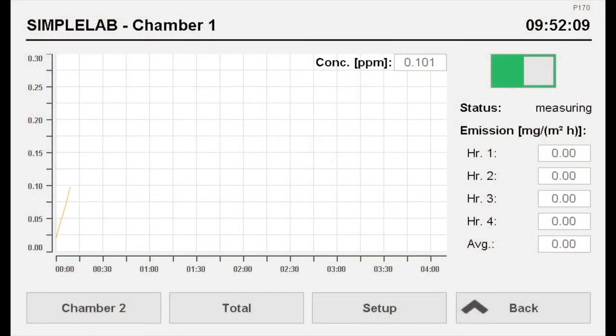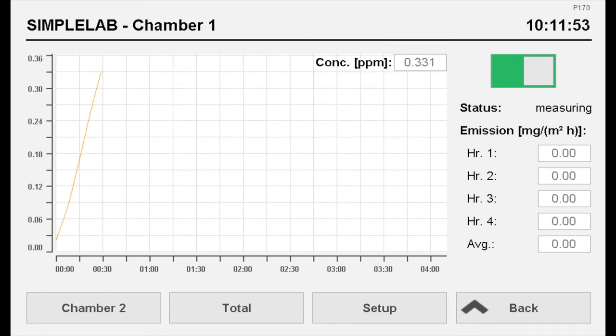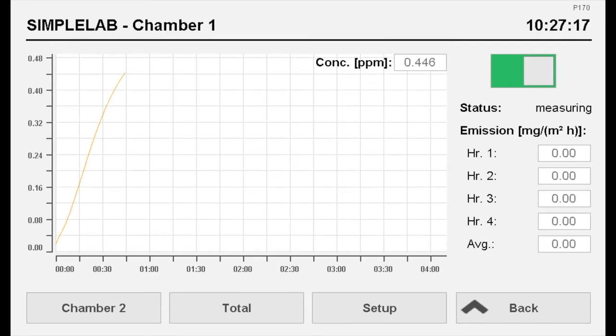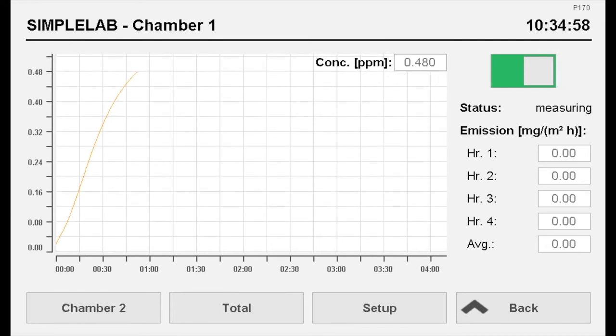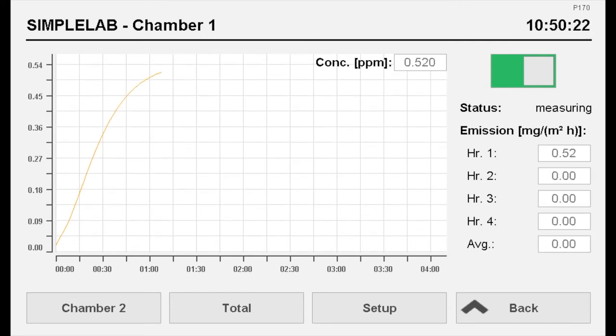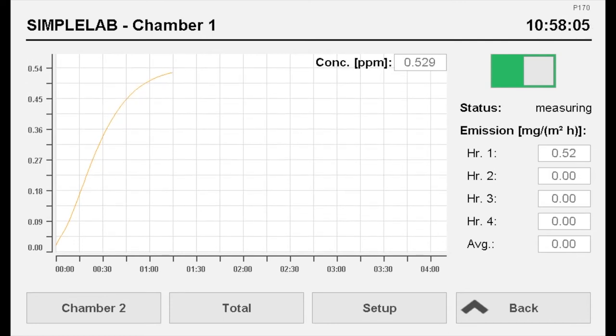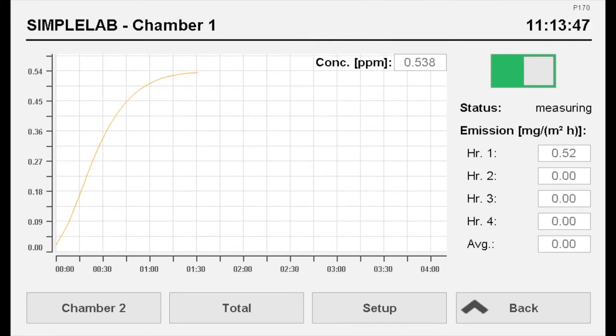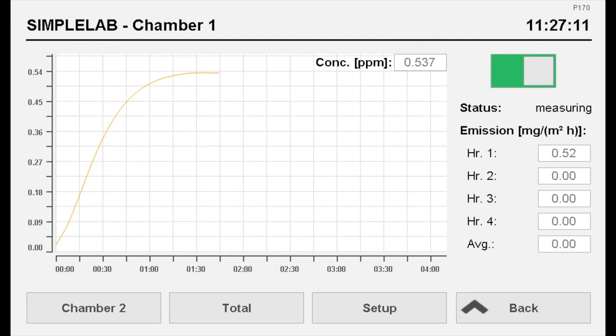The process of the measurement can be followed via the GA screen. This sequence shows a measurement of a 19 mm chipboard as an example. The X-axis shows the test time. The Y-axis shows the formaldehyde concentration in the sample gas stream in ppm. Next to the graph, the gas emission values of the individual test hours and the total gas emission value are displayed.